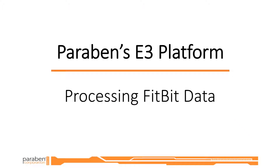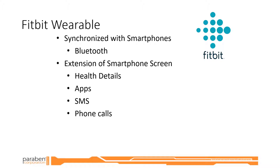Welcome to Paraben's E3 platform, processing Fitbit data. When processing Fitbit devices, the most common method for capturing data is to go to the integrating hub associated with the device app. Typically, this is the smartphone. Within the app, a lot of data can be found on the device, to include health data, SMS data, phone logs, etc.